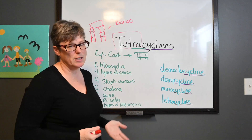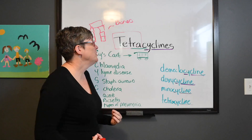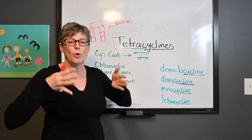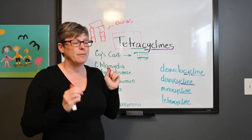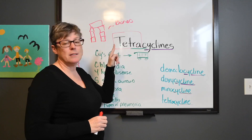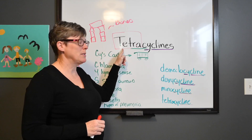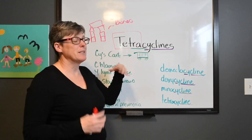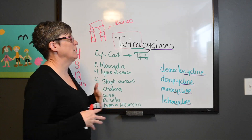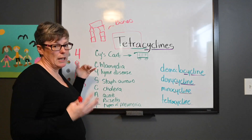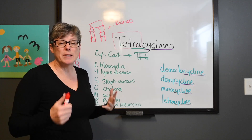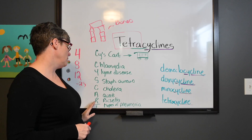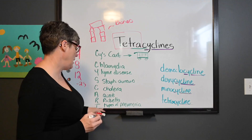When you just look at the word tetracycline, you can visualize Tetris — all those cubes stacking up, bones and teeth growing. Four rings, no use under age eight, and a twelve-hour half-life. With SYZECART we know it covers gram-negative and gram-positive, and the letters give us the diagnoses: chlamydia, Lyme disease, staph aureus, cholera, acne, rickettsia, and types of pneumonia. When you have a patient with these diagnoses on a tetracycline, it makes sense.